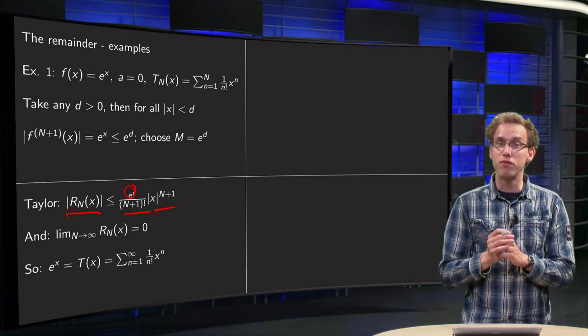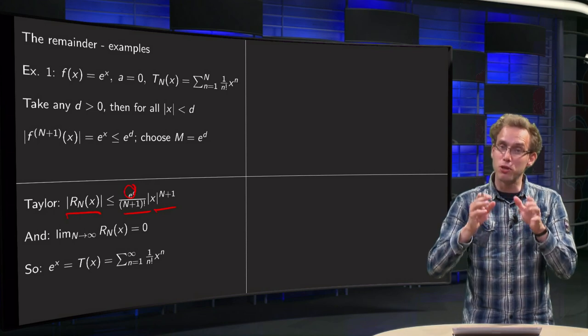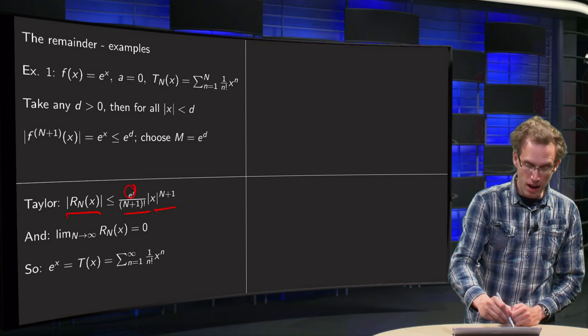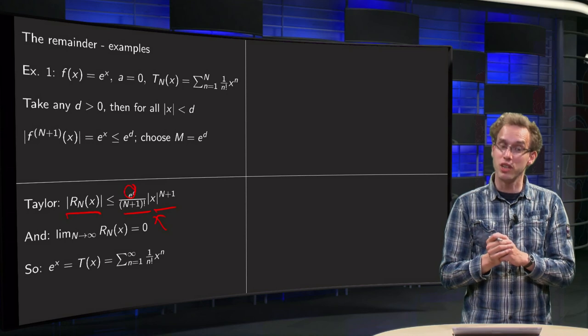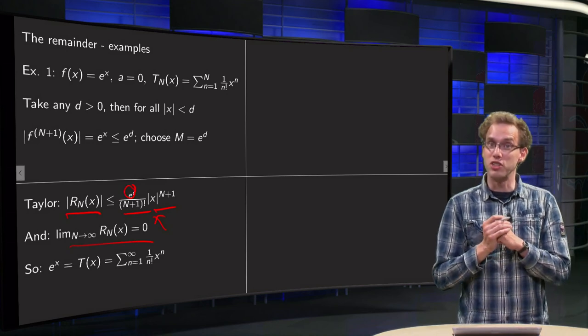Now we see that for all x in this interval minus d to d, x to the power N plus 1 will be some finite number. However, N plus 1 factorial blows up, so dividing by that means our quotient goes to 0, so in the limit, this remainder equals 0.